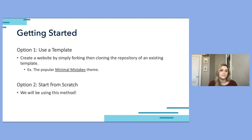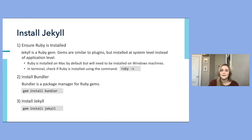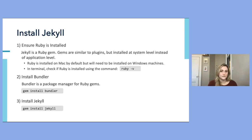Now let's get Jekyll installed. First make sure that Ruby is installed on your machine — it should be installed on Mac by default, but Windows users may need to install it themselves. Then install Bundler, which is a package manager for Ruby gems that tracks installed gems and their versions. Finally, install Jekyll. All of these commands can be used in the terminal to complete this process.